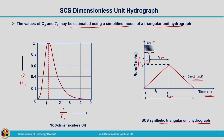The time to peak, capital TP, is the time from the beginning of direct runoff to the peak of the unit hydrograph — also called time of rise. Do not confuse small TP with capital TP. Capital TP is the time of rise from the beginning of runoff to the peak. Small TP is the basin lag — the time elapsed between the centroid of the effective rainfall hydrograph and the peak of the unit hydrograph.